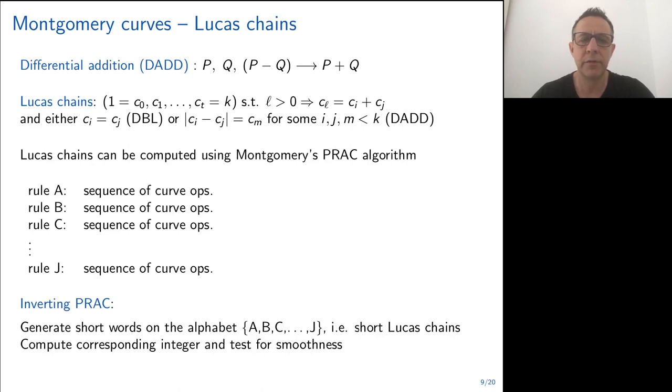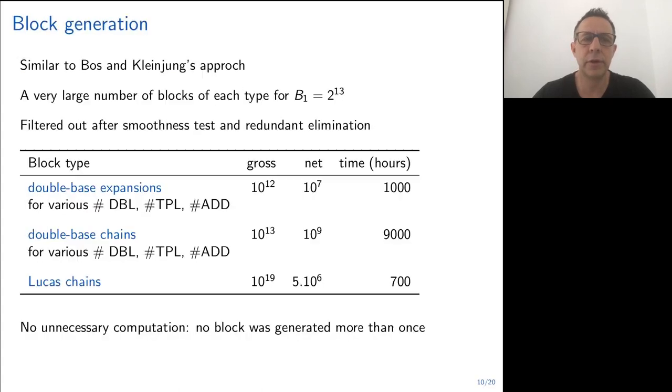You can see this algorithm as a big switch algorithm. You have a rule A given according to some invariants, and you can have a corresponding sequence of operations, and then rule B, etc. The way we produce a Lucas chain in the same vein as before, we simply generate short words on the alphabet A, B, C, up to J that correspond to the rules. That means that we generate some short Lucas chains. Then we compute the corresponding integer and test for smoothness as we did before.